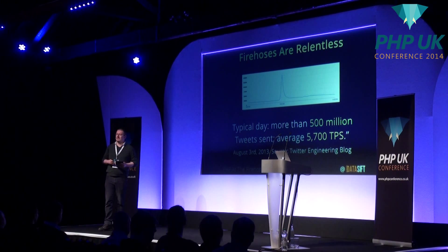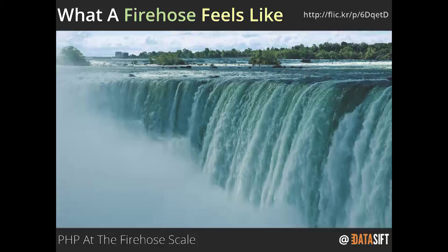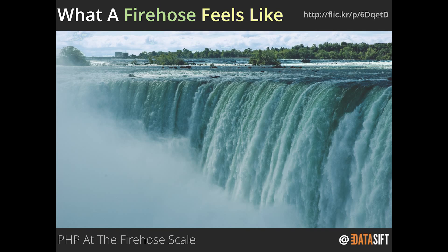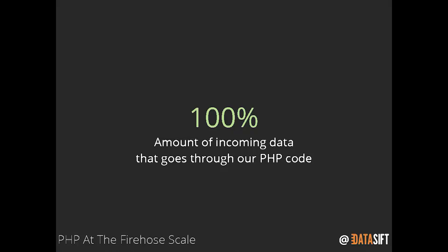This gives you a good idea for what fire hose scale means - and this is just one of the fire hoses we have at DataSift where I work. Fire hoses feel like the thunder of Niagara Falls - constant pressure coming over and you've got to be able to keep up with it. PHP can do this. 100% of all the fire hose data that comes into our business is processed by PHP code. Every single piece of data that comes in via fire hose goes through our PHP code. So if anyone says PHP can't do X, Y, Z, we know it can because we're doing it.